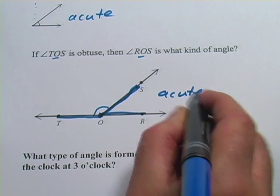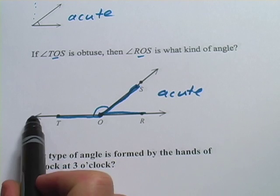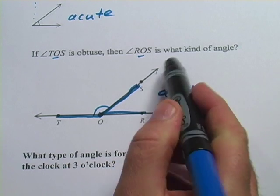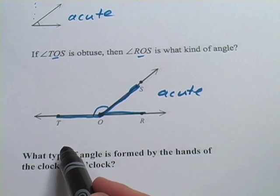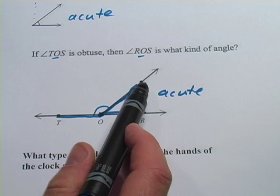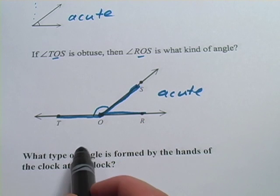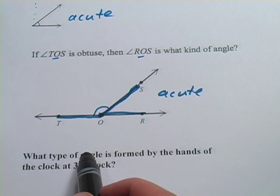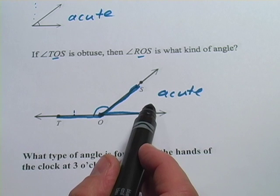And this is always going to be the case when you have a diagram like this with a straight line at the bottom and another line cutting it into two angles. One of them is going to be obtuse, and the other one is going to be acute. Or if this line was straight up and down, both would be right angles. But if one's obtuse, the other is definitely going to be acute.